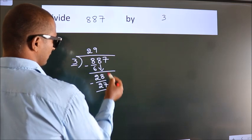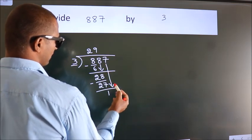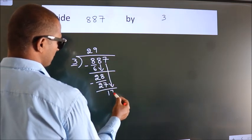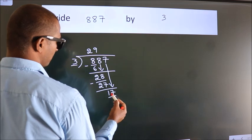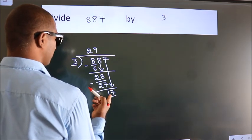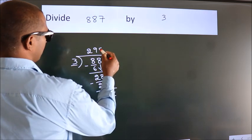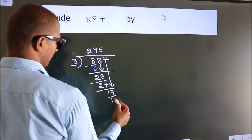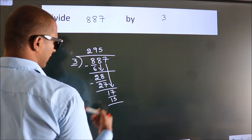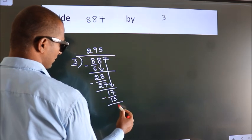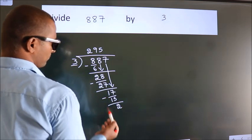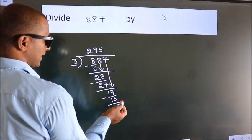After this bring down the beside number. So 7 down. So 17. A number close to 17 in 3 table is 3 times 5 is 15. Now we subtract. We get 2. No more numbers to bring down.